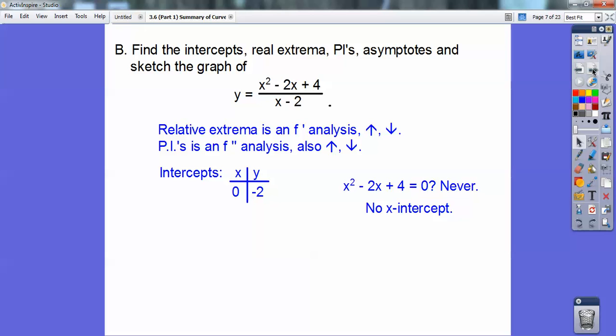So the intercepts. There's no x-intercept, because I can't make y equal to zero. I can never make this numerator equal to zero, because this doesn't give me any real numbers right here. But the y-intercept is when x equals zero. When x equals zero, I plug in zero into all these, and I get y equals negative two. So I do know it has a y-intercept at negative two.